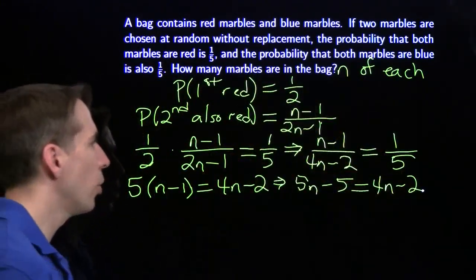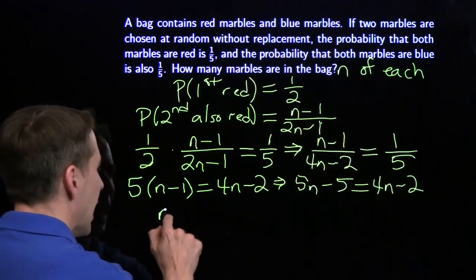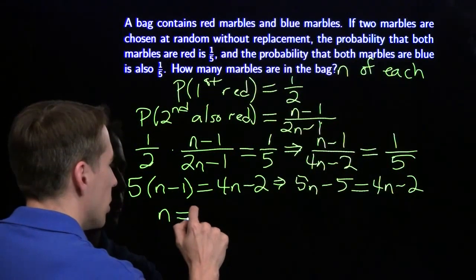Clean this up, subtract 4n from both sides, add 5 to both sides, and I'm going to get n equals 3.